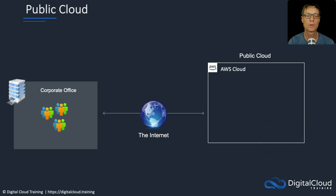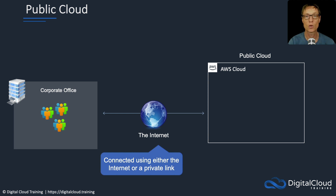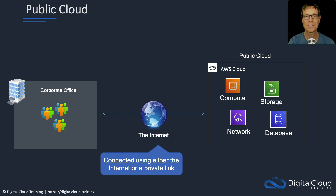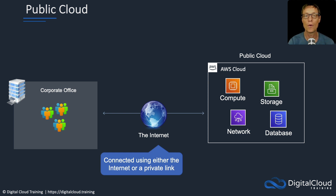Next, we have the public cloud. Typically, you'll connect over the internet or a private network connection to a public cloud. From your corporate office, you can provision compute, storage, network, and databases, consuming all sorts of services from your corporate data center. You can also consume them from anywhere else because they're cloud-based services with broad network access — so you can use them on the road as well.